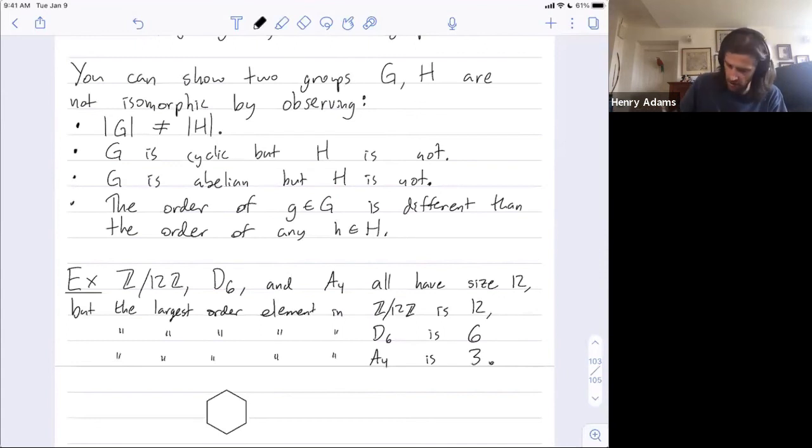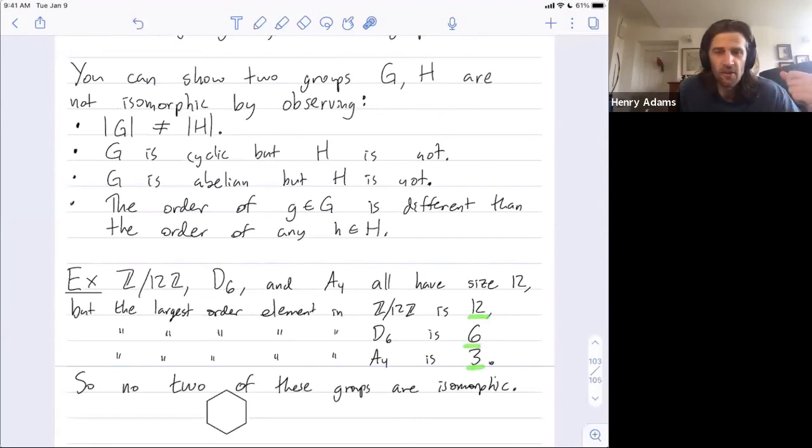So no two of these groups are isomorphic. Sure, they have the same size, so they might be isomorphic - size alone doesn't rule that out. But look at the orders of the elements: in Z mod 12, the largest order element you can find has order 12; in D6, the largest order element you can find has order 6; and in A4, the largest order element you can find is order 3. And that's enough to immediately show that they're not isomorphic.